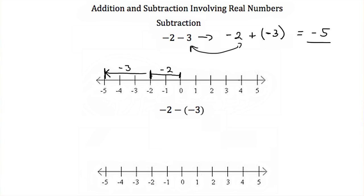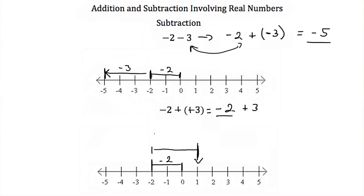Let's try again. Here we have negative 2 minus a negative 3. Remember, subtraction is the same as addition — you just swap the sign on the second term. So this becomes negative 2 plus 3. On a number line, we start at 0, move left 2 for negative 2, then move right 3 for the positive 3. So negative 2 minus a negative 3, which equals negative 2 plus 3, is positive 1.